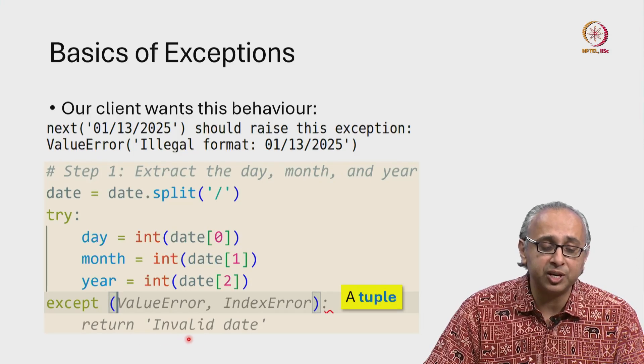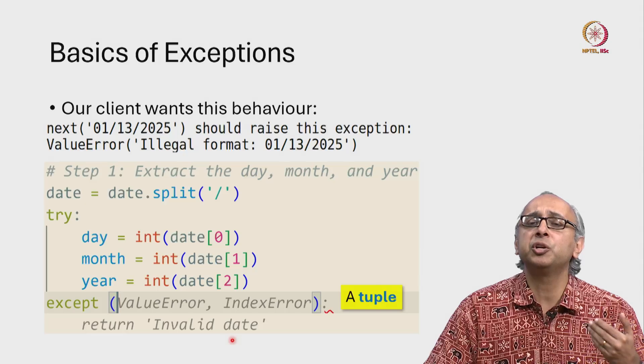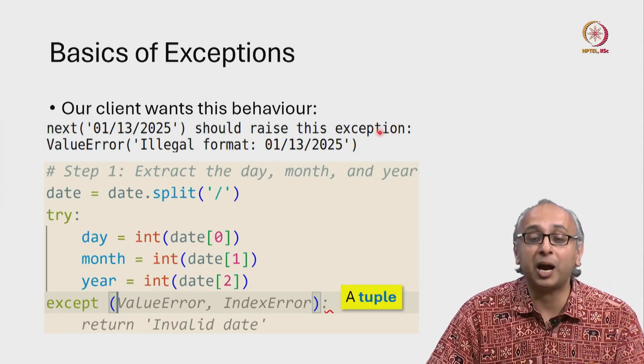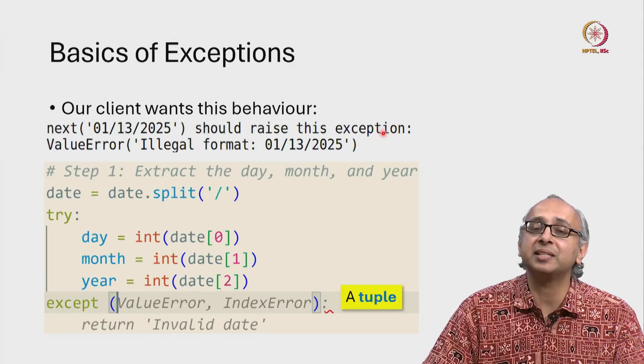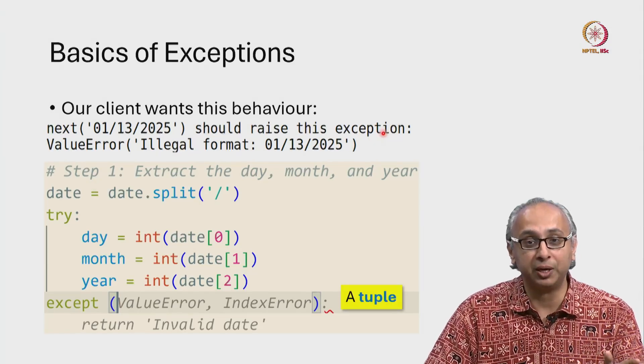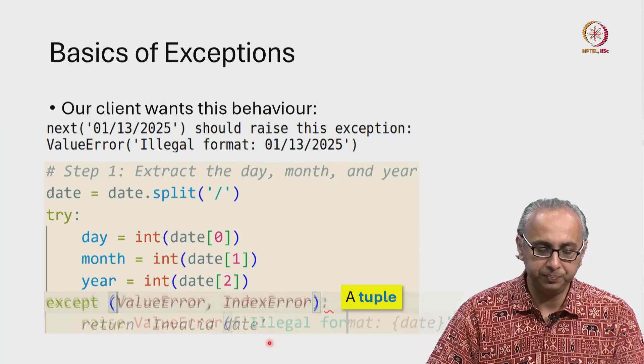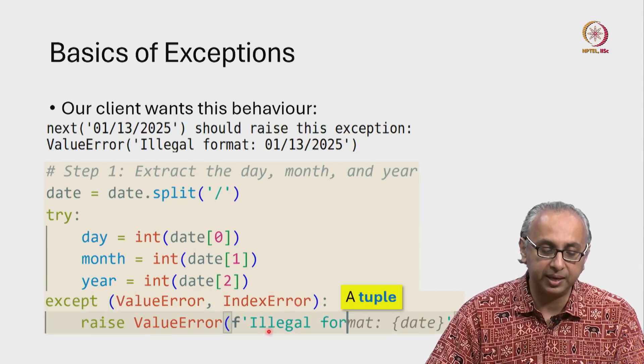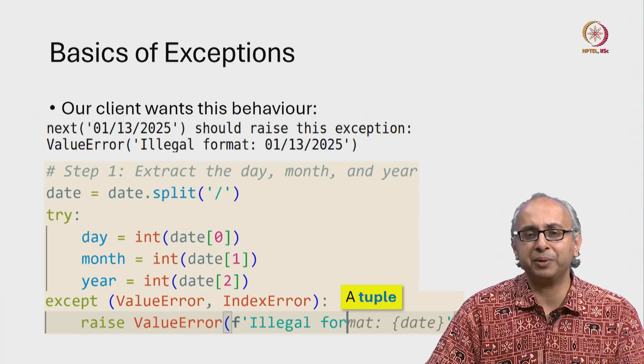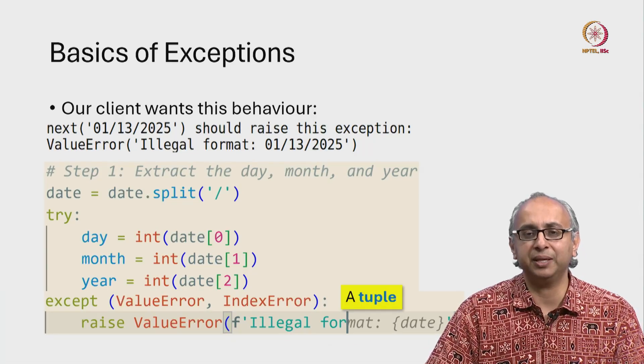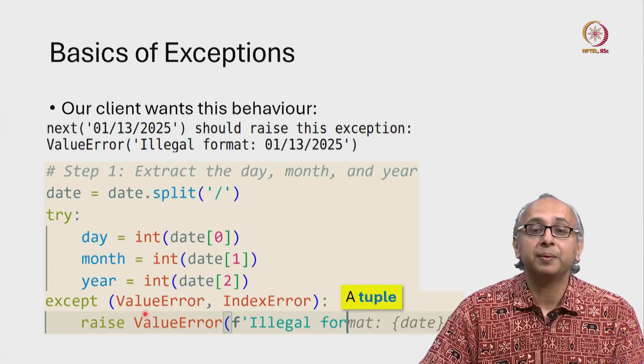It's a reasonable suggestion, but it is not what our client wants. Our client wants us to raise an exception, not return a string. So we will ignore this part of the suggestion. We will say in this case, raise a ValueError and then our AI can help us complete the necessary string to return based on our client's request.